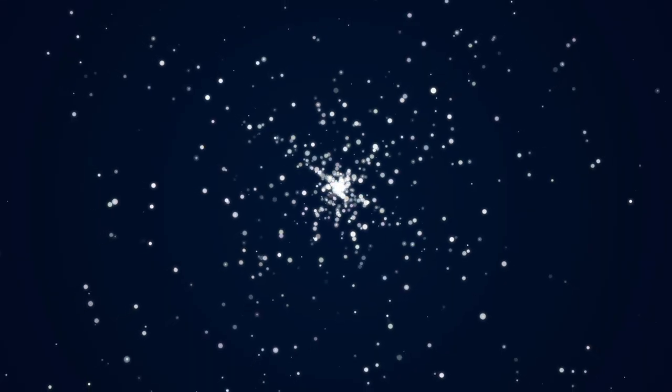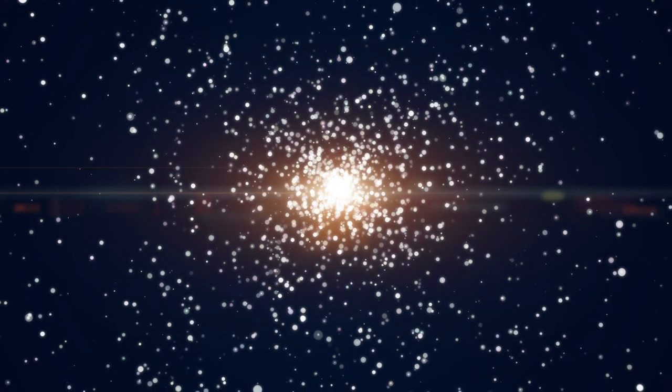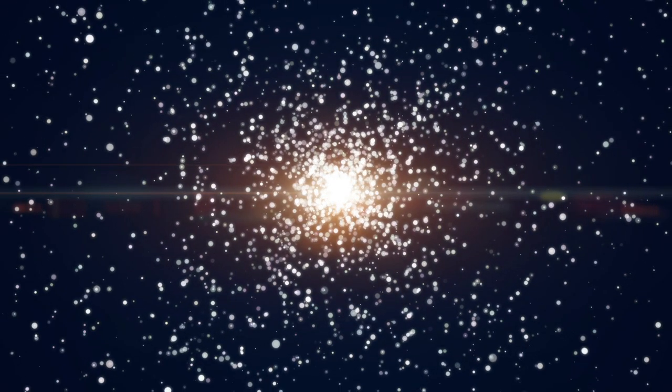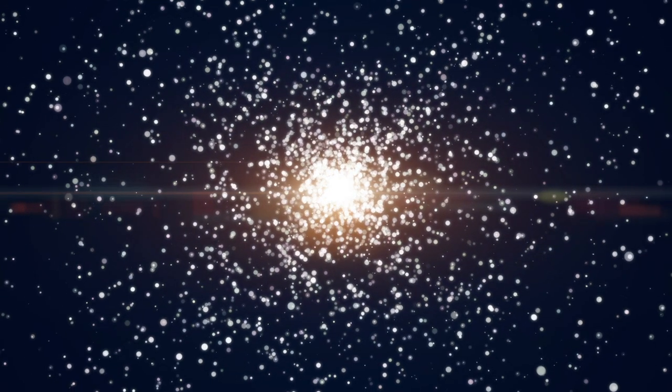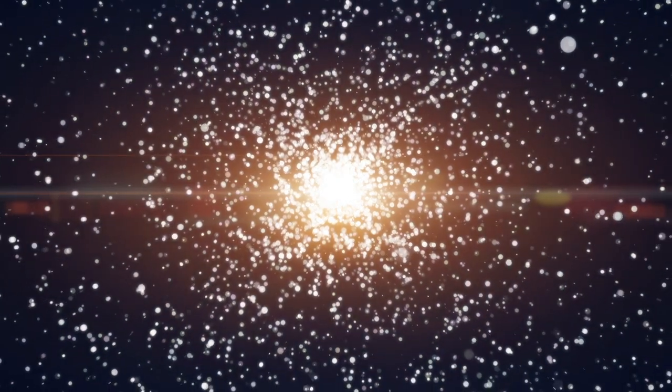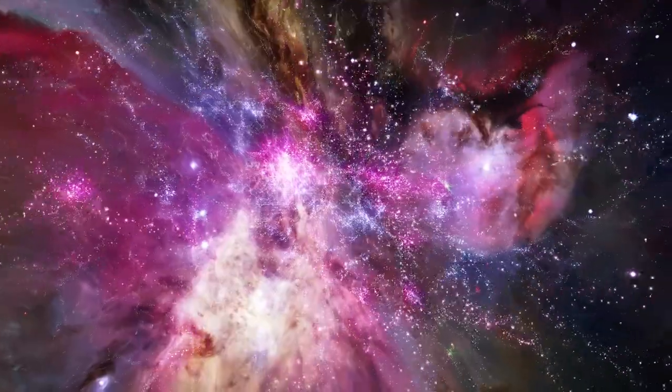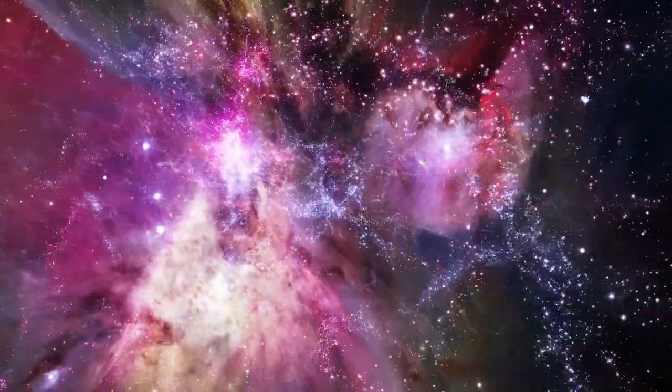This idea of our sun having a twin star might seem far-fetched, but it's actually not that uncommon. In fact, it's estimated that as many as 80% of all stars in our galaxy are born in binary systems. So it's entirely possible that our sun was born with a twin, which could have implications for our understanding of the universe and our place in it.